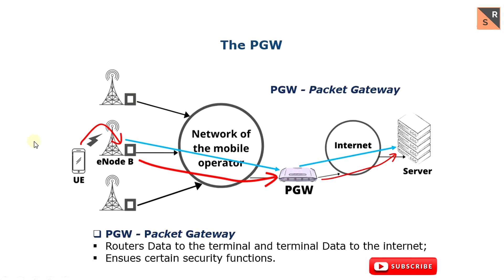If we have a network with a very large number of subscribers, like in China or India, there can be several PGW gateways because one PGW does not have enough capacity to manage all the packets. Several PGW gateways can also be necessary to have redundancy and ensure reliability. However, PGWs are limited in number.